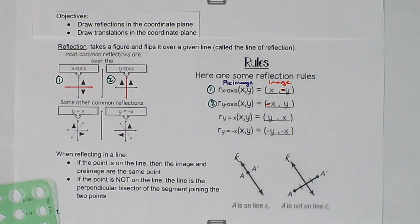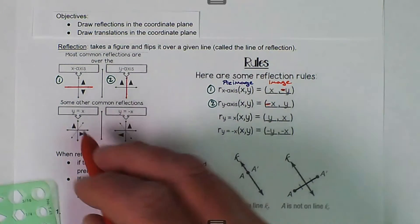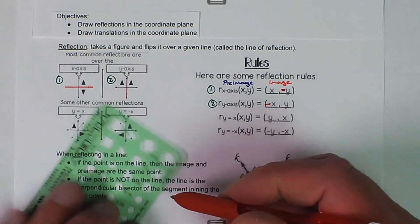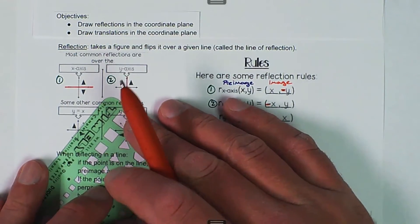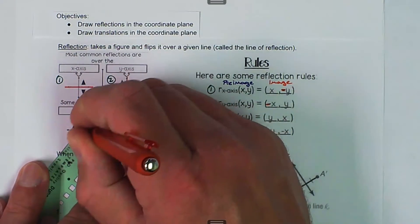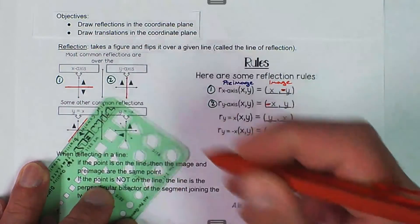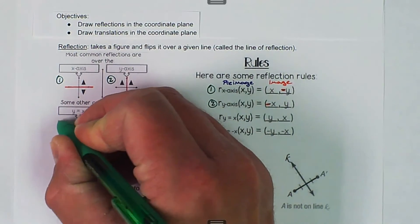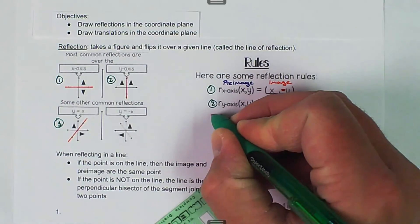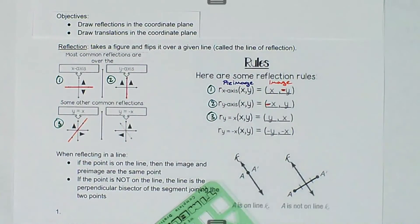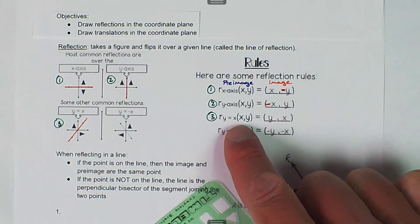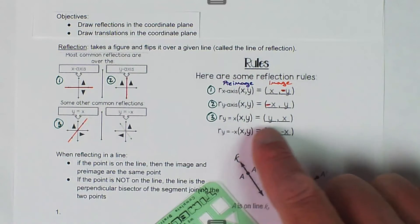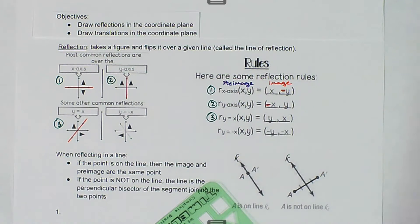The other ones are a little more complicated. Here we have the reflecting over the line y equals x. So right there is the line y equals x, and that is going to be 3. This one is 3. So reflection over the line y equals x: (x,y) becomes (y,x).